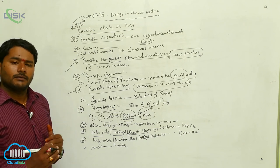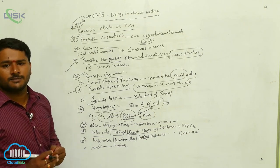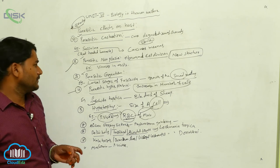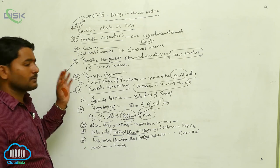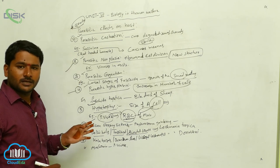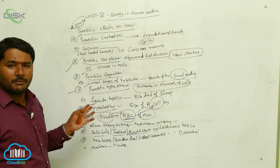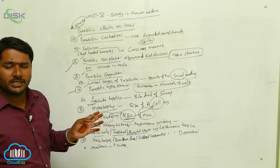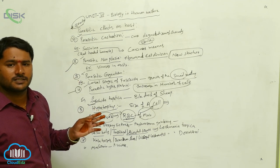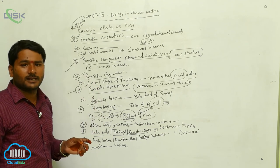Different types of diseases are caused by different types of organisms. For example, tuberculosis, filariasis, and amoebiasis are all caused by different types of parasites.